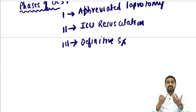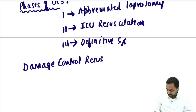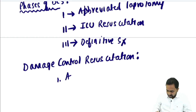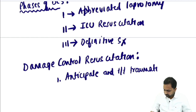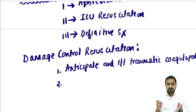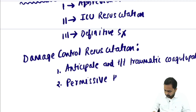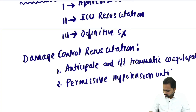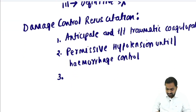With damage control surgery has come the concept of damage control resuscitation. The components are: number 1, anticipate and treat traumatic coagulopathy; number 2, permissive hypotension until hemorrhage control — we do not want to increase the patient's pressure while bleeding, as it will cause more bleeding; number 3, limit crystalloid and colloid infusion to avoid dilutional coagulopathy.